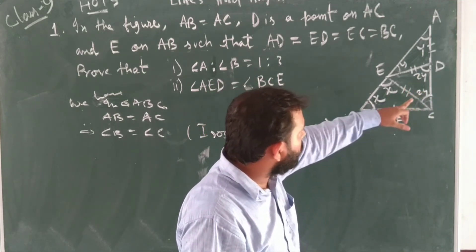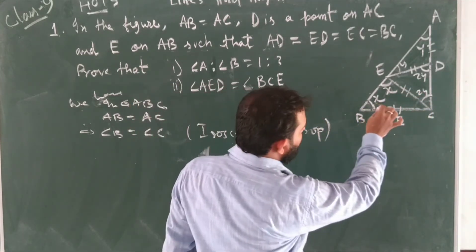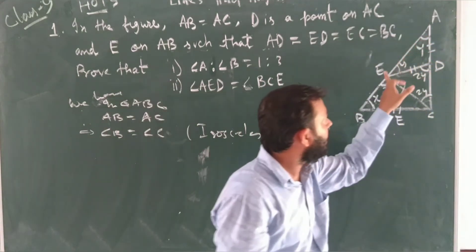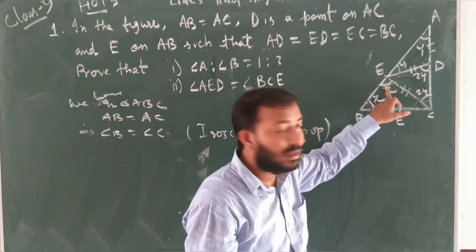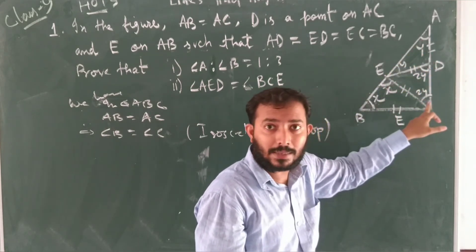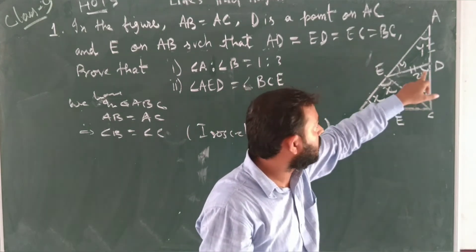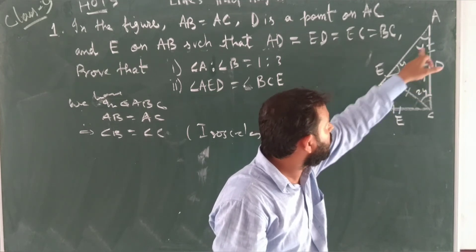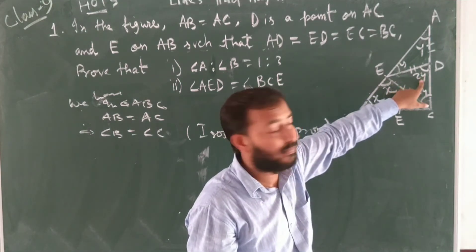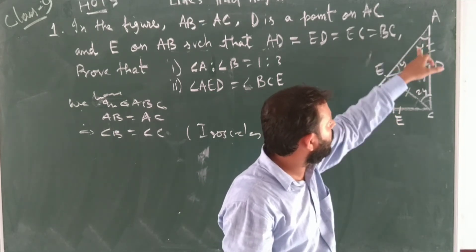The exterior angle property says the exterior angle equals the sum of the two non-adjacent interior angles. So X must equal Y plus Y plus 2Y — actually, X equals Y plus 2Y, which gives X equals 3Y.